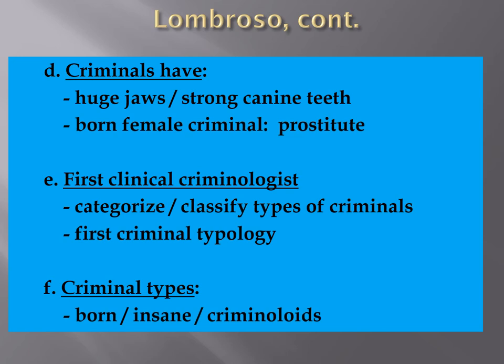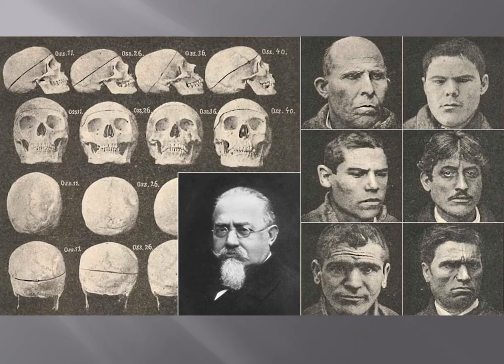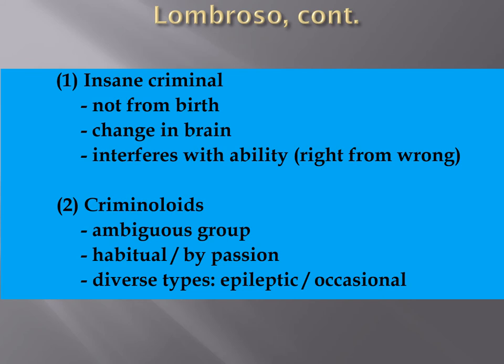Crimineloids were people who evolved into criminals, either through habitual criminal behavior or by becoming criminals by passion. Diverse types included epileptic crimineloids and occasional crimineloids — essentially habitual versus non-habitual criminals. For the insane criminal, they were not insane from birth but had a change in the brain during life that interfered with the ability to determine right from wrong.